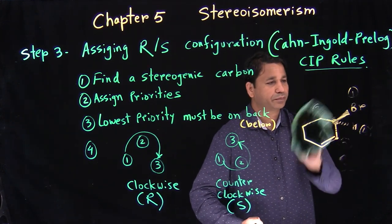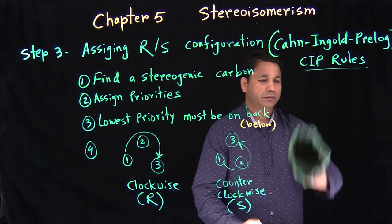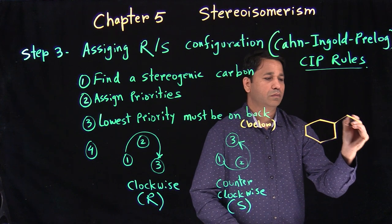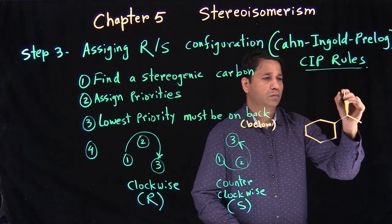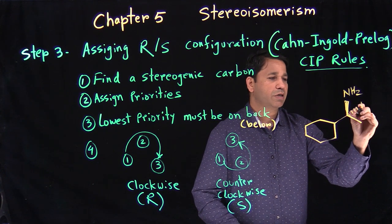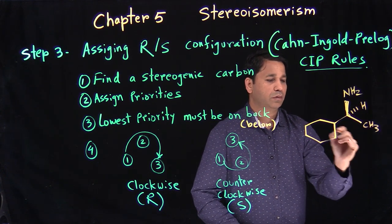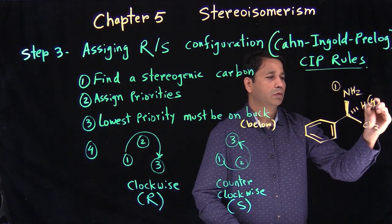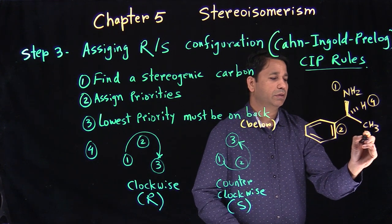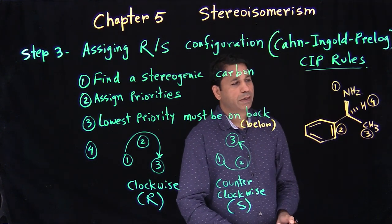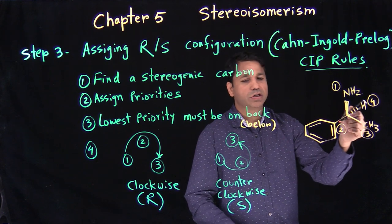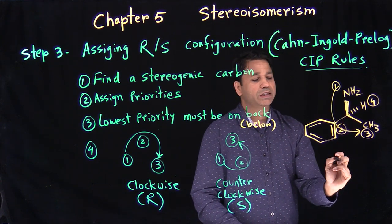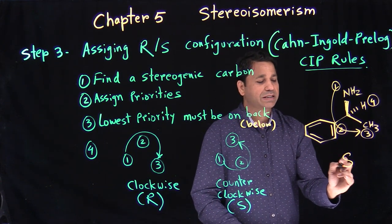Let's try this example. The fourth group is hydrogen, which gets number four priority. This gets number one priority, this gets number two, and this gets number three. The fourth priority is already on the back. Connecting one to two to three, we're going left — counterclockwise — so that is S.